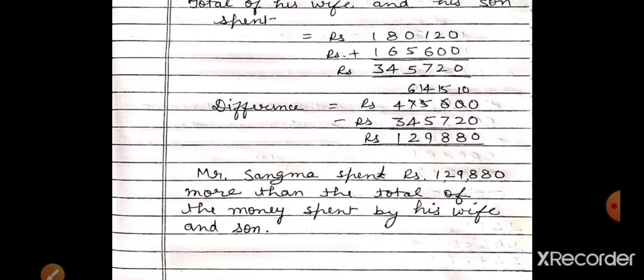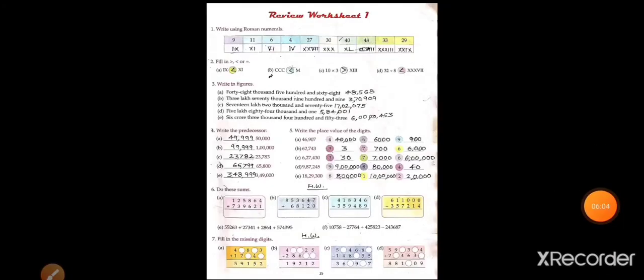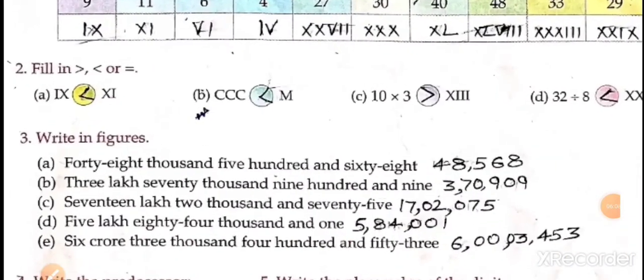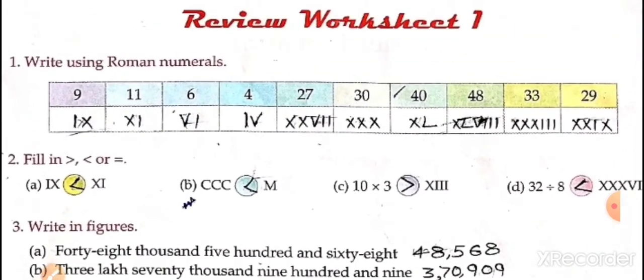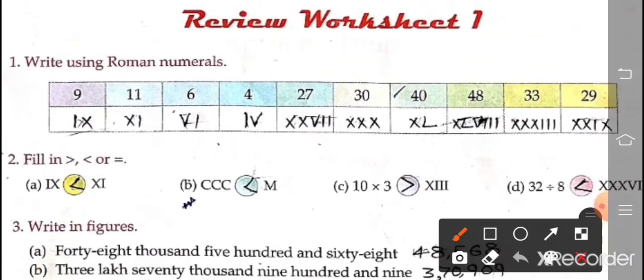So these are 6 questions from exercise 5E. Now exercise review worksheet 1 at page number 35. Question number 1: write using Roman numerals. Numbers are given — we have to write them in Roman. So for 9: IX.